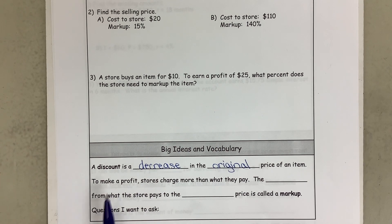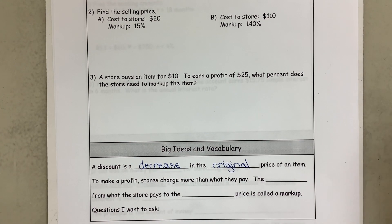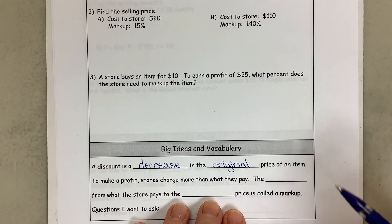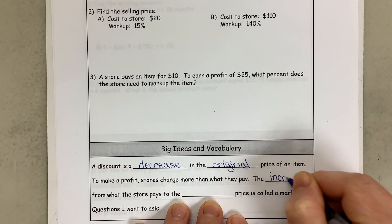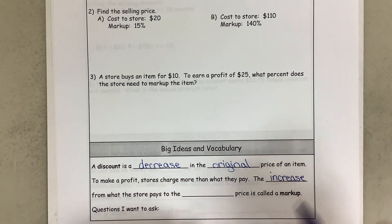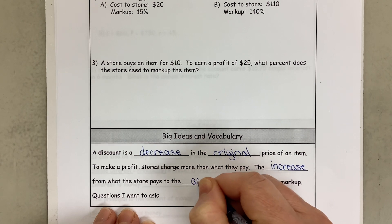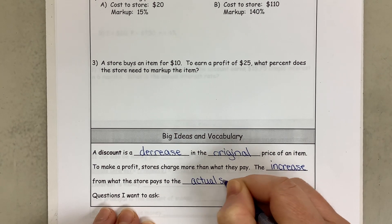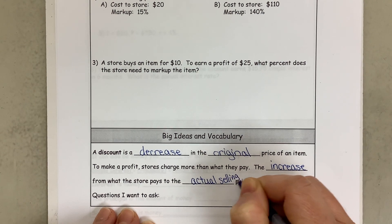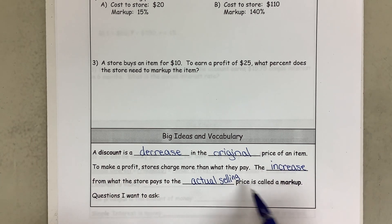Now to make a profit, stores charge more than what they pay, which we know because that's why they can manage to give a discount. The increase from what the store pays to the actual selling price, so the price that you are paying is an increase from what the store paid, and that is called a markup.